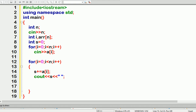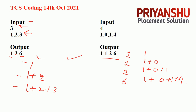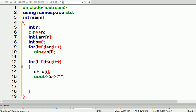Then again I run another loop: 'for i equal to zero; i less than n; i++'. Inside, I do 's plus equal to arr[i]' and then 'cout s'. So the logic is: first print one, then add two to get three and print three, then add three to get six and print six. This is how the cumulative sum is printed.